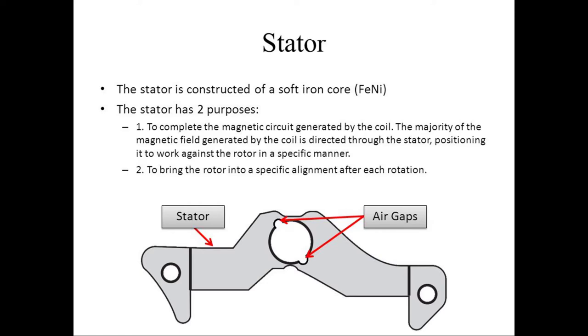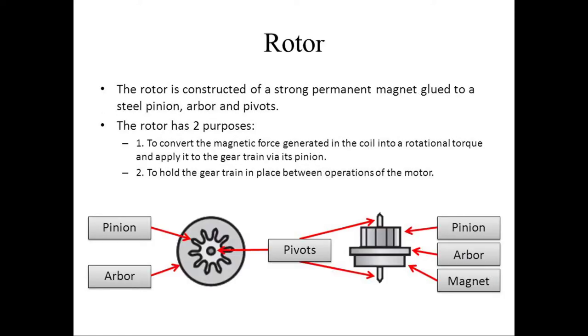The rotor is constructed of a strong permanent magnet. The rotor has two purposes: one, to convert the magnetic force generated in the coil into a rotation of torque and applied to the gear train's pinion; two, to hold the gear train in place between operations of the motor.